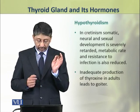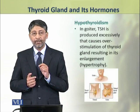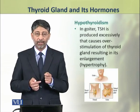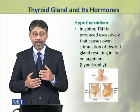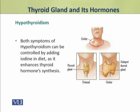Inadequate production of thyroxine in adults leads to goiter. In goiter, TSH from the pituitary is produced in high quantity, which causes excessive stimulation of the thyroid gland, which becomes enlarged — i.e., undergoes hypertrophy. We can see the symptoms of goiter in a patient with an enlarged throat; inside, we can see the hypertrophy of the thyroid gland. Both cretinism and goiter can be controlled and treated by adding iodine to the diet.